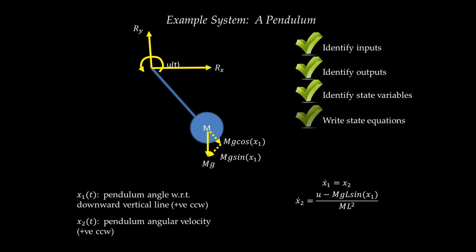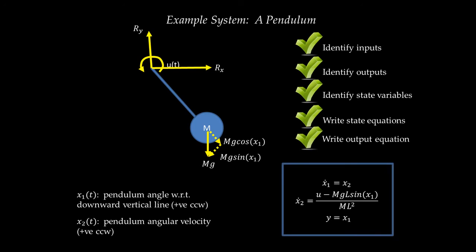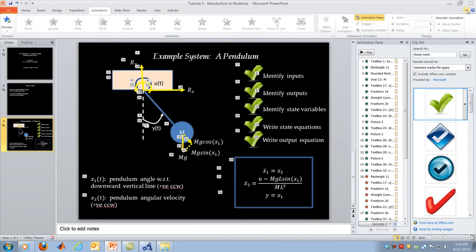The state equations are now complete. The angular acceleration is (1/ML²) times (U − MgL·sine(X1)). The output equation is simply Y = X1, since the output angle is the same as state X1. This complete set of state and output equations constitutes the state-space model of the pendulum. We've now built a state-space representation for the dynamics of a simple rotational mechanical system.